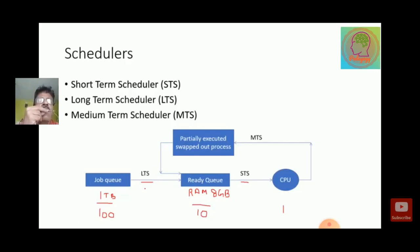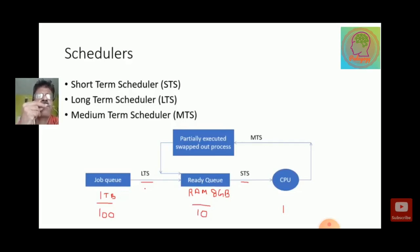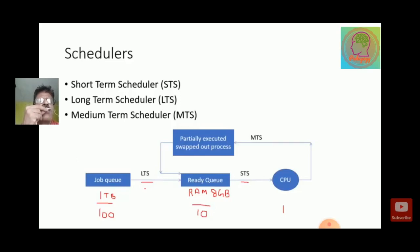In our next video we will discuss the scheduling algorithms with numerical examples. These numericals will come in your make-out exams and in any university's exams. The names of the algorithms are: FCFS (First Come First Serve), Shortest Job First, Priority algorithm, and Round Robin algorithm. These algorithms are under the categories of preemptive and non-preemptive, and all are under the short term scheduler, which covers the movement from the ready queue to the CPU.